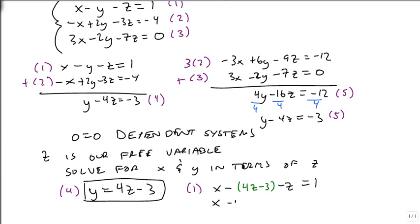So then x, distribute the negative through. Combine like terms. And solve for x so that x is 5z minus 2. And now x is in terms of z as well.